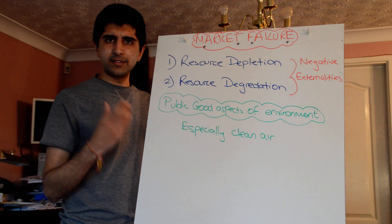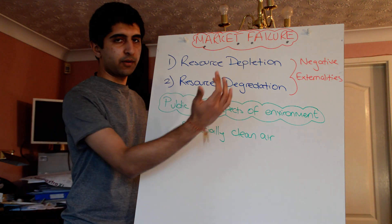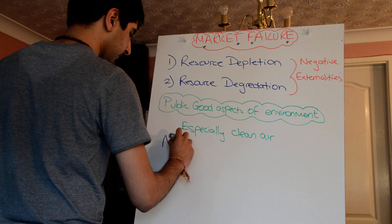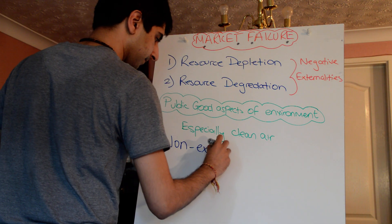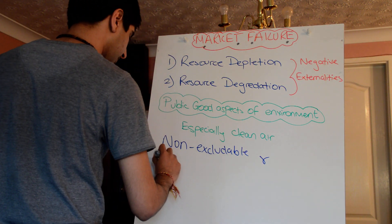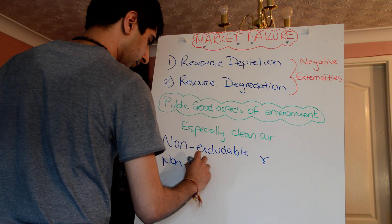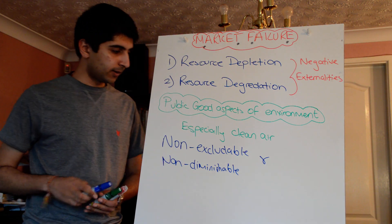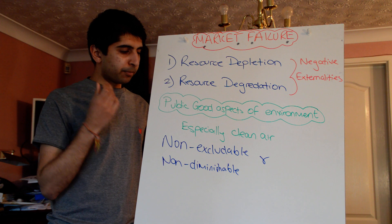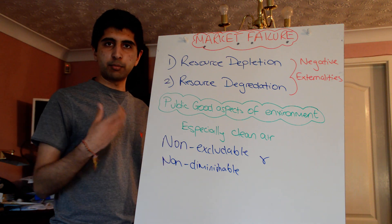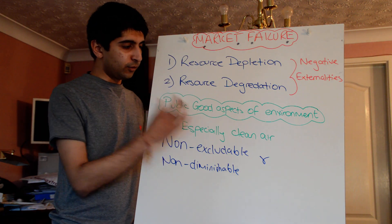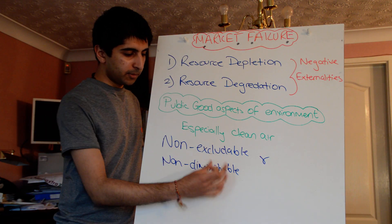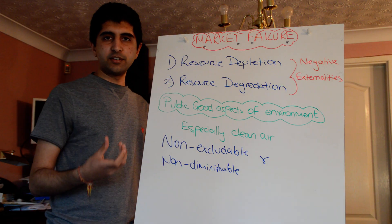There are also several aspects of the environment that are considered to be a public good, and notably clean air is that kind of thing. A public good is both non-excludable and non-diminishable — it needs to have both of these characteristics. Clean air is an example: it's non-excludable, meaning a price can't be charged for it. We can't exclude people from using clean air by putting a price on it, because we can't confine its use to people who have paid for it. It's also non-diminishable because one person using clean air doesn't diminish the supply to somebody else.